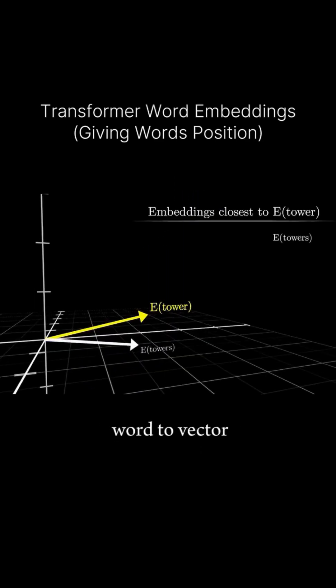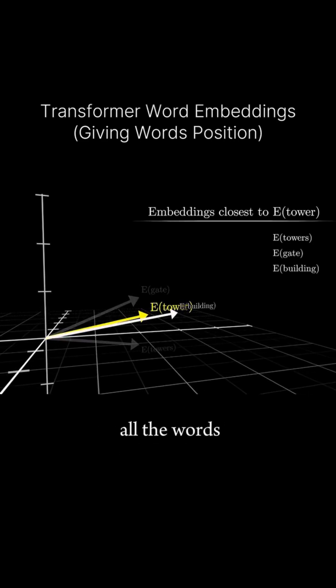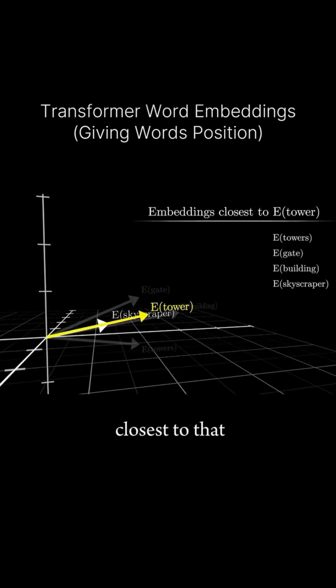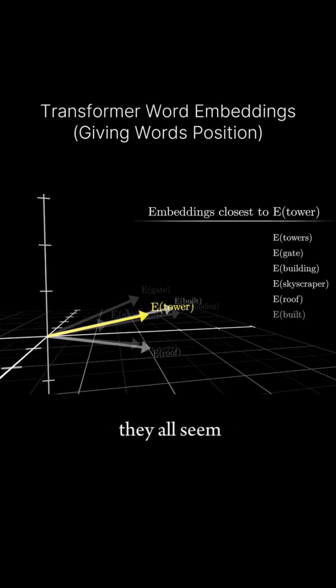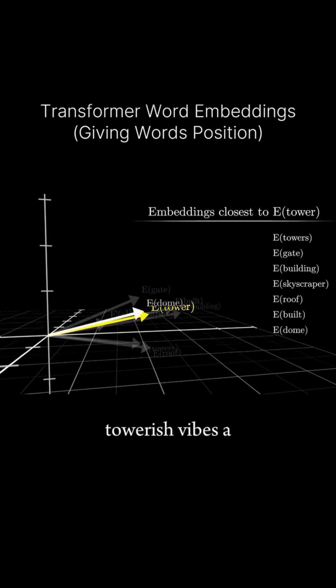For the simple word-to-vector model I'm running here, if I run a search for all the words whose embeddings are closest to that of tower, you'll notice how they all seem to give very similar tower-ish vibes.